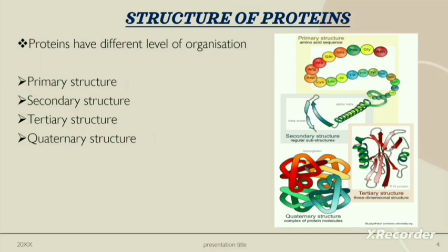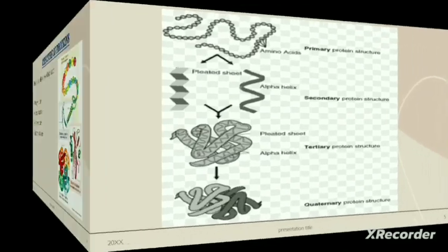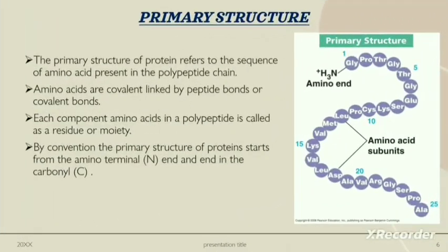Proteins have different levels of organization. These are the structures of the proteins. The primary structure of protein refers to the sequence of amino acids present in the polypeptide chain. Amino acids are covalently linked by peptide bonds. Each component of amino acid in a polypeptide is called a residue. By convention, the primary structure of protein starts from the amino terminal and ends in the carboxyl terminal, the C end.